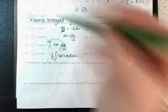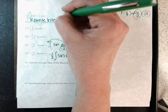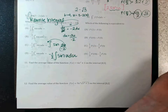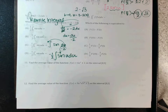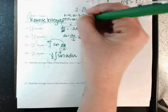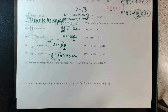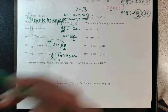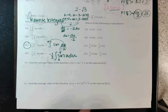They want the integral in terms of u, so change the endpoints. Upper bound was 4: u = 3 - 2(4) = 3 - 8 = negative 5. Lower bound was 0: u = 3 - 2(0) = 3. No need to take the antiderivative — they just ask which is equivalent. I need negative one-half in front, and endpoints of negative five and three, so the answer is C.